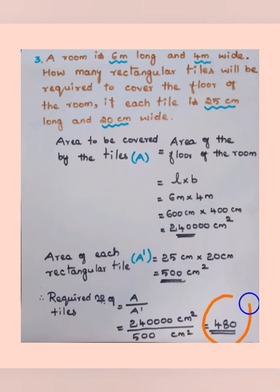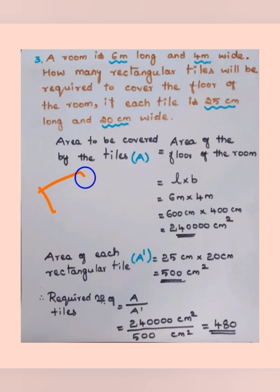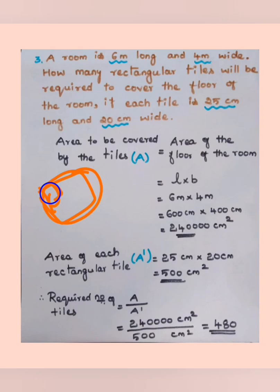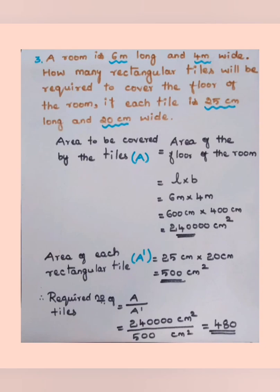So 480 tiles are required to cover the floor of the room. The method is: find the area of the room and the area of each tile, then divide the larger by the smaller to get the number of tiles required.